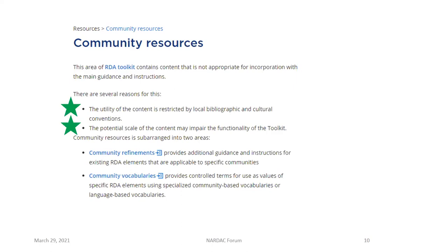The initial content planned for Community Refinements are instructions mainly for authorized access points for special kinds of works: musical works, religious works, legal works, and official communications. During the RDA Beta period, this content was marked as special elements and fell outside of the Toolkit's main organization. These instructions for authorized access points for special kinds of works will be considered as refinements. If all of those instructions were placed into the one element page for authorized access point for work, that page would be enormous — and that's a scalability issue. Other communities adding their specialized instructions would overwhelm that single element page.